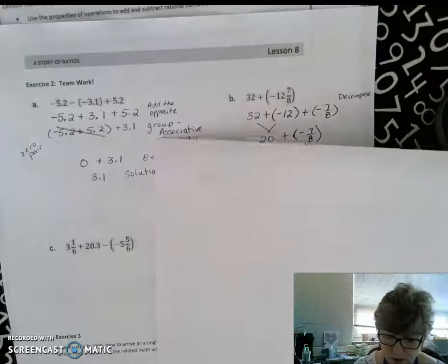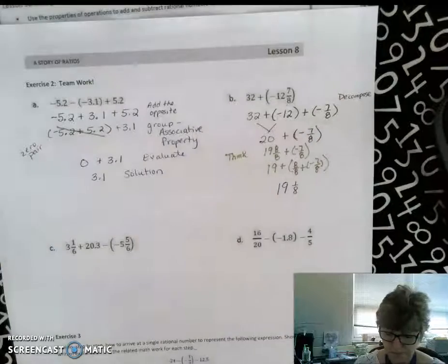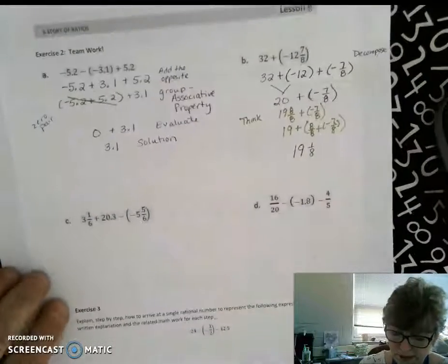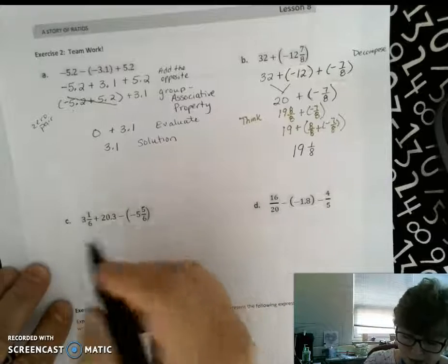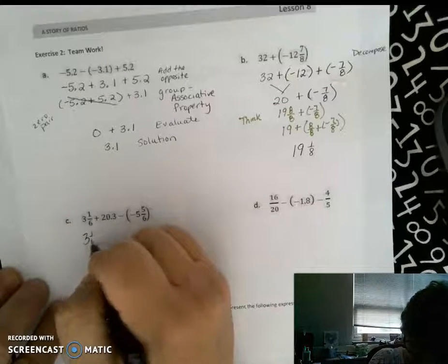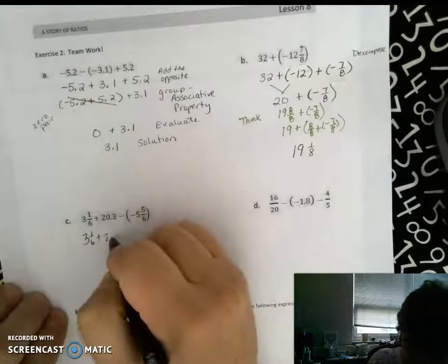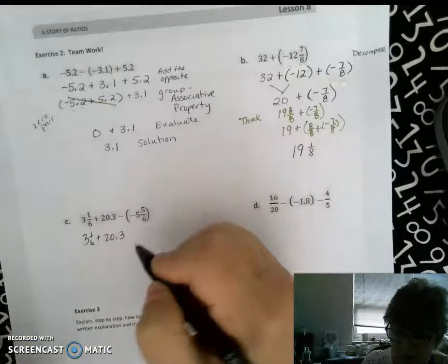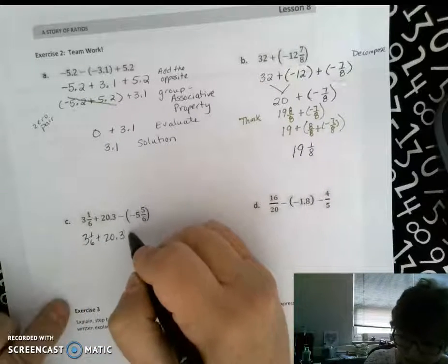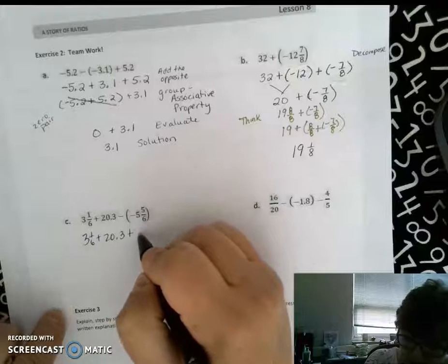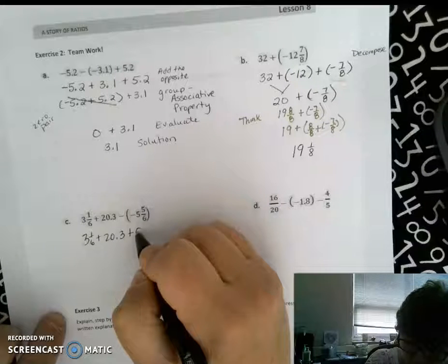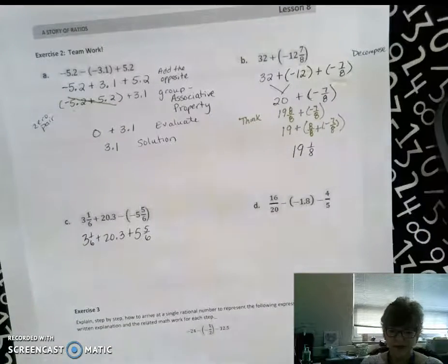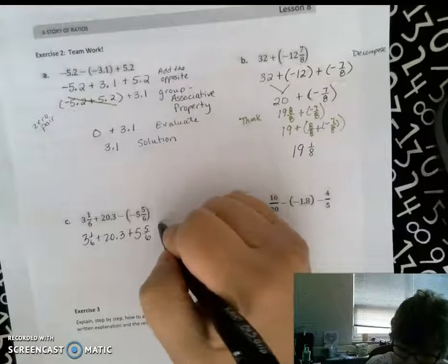As we move down to C, we're going to work through C fairly quickly. Step one, using that additive, the adding, the opposite. I know you see fractions and decimals, but don't make any changes yet. Let's wait and see if it naturally changes by itself. Now that I'm here, I'm noticing, I use the add the opposite.